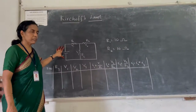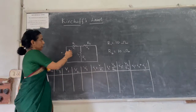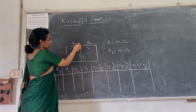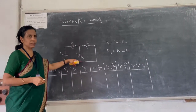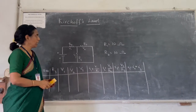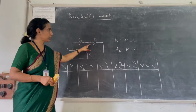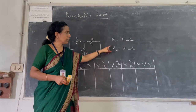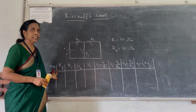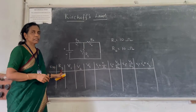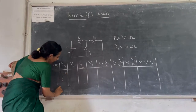This is the circuit diagram for Kirchhoff's laws. We have R1, R2, and R3 — three resistance boxes connected in this configuration. We are keeping the resistances R1 and R2 constant at 10 ohms, and we are taking observations by changing R3 from 10 ohms to 100 ohms.